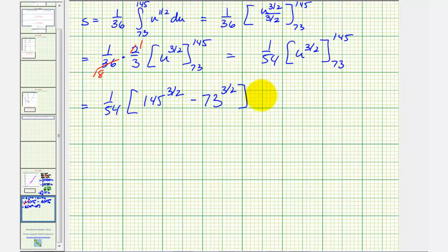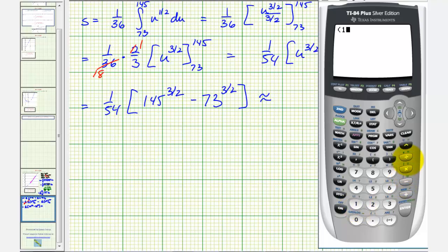And now go to the calculator to get a decimal approximation. So we have 1 over 54 times 145 to the 3 halves power, minus 73 to the 3 halves power. So the arc length is approximately 20.7837.